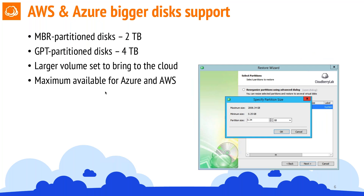The next change is about disk size — specifically the maximum disk size when restoring image-based backup into AWS as an EC2 virtual machine or into an Azure virtual machine. We used to have a one terabyte limitation due to cloud provider constraints. Since they introduced larger volumes, we now support up to two terabytes for MBR partition disks, or up to four terabytes for GPT partition disks.